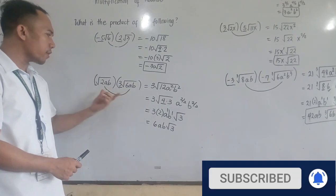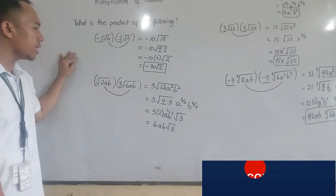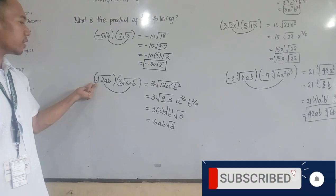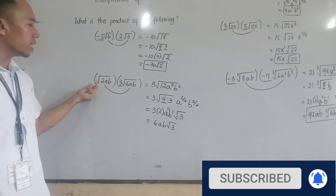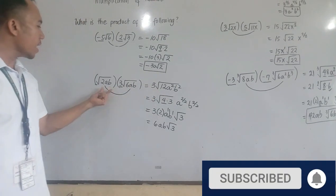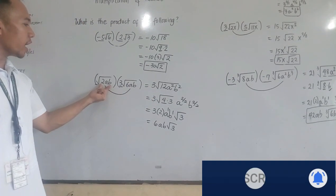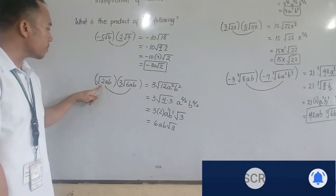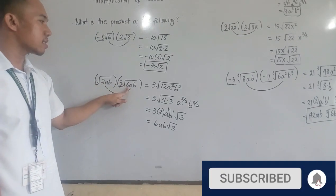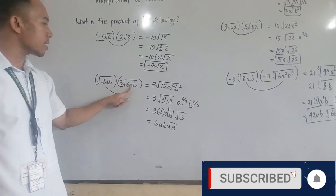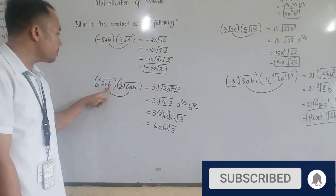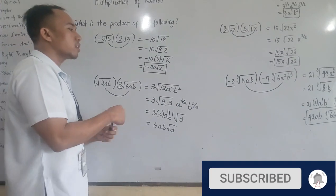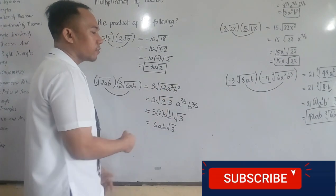For the second example, you have square root of 2ab times 3 square root of 6ab. First multiply the coefficients: you have 1 here, so 1 times 3 is 3. Then radical 2ab times radical 6ab: the numerical part is 12, which comes from 2 times 6. Then a times a gives you a squared, and b times b is b squared.